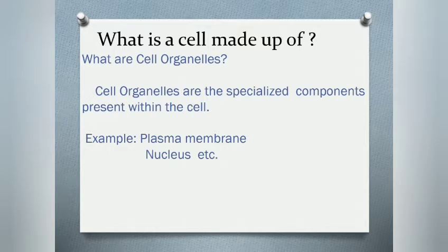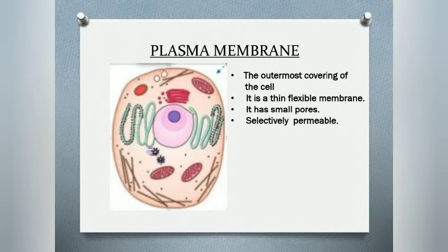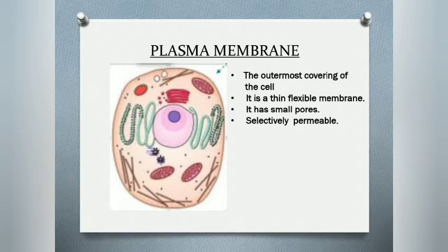The first one is plasma membrane. This picture shows the structure of a cell. The outermost covering or boundary of the cell is the plasma membrane. It is also called the cell membrane. It protects the inner contents present inside the cell from the external environment. It is a very thin, flexible, living membrane.